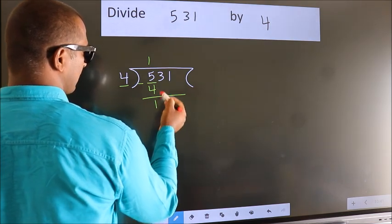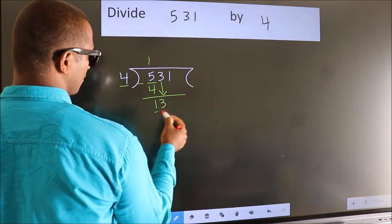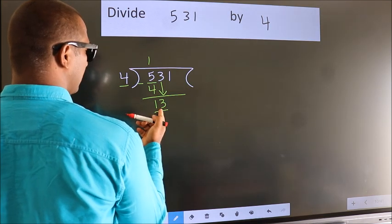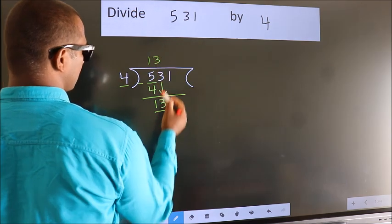After this, bring down the beside number. So, 3 down. So, 13. A number close to 13 in 4 table is 4 threes, 12.